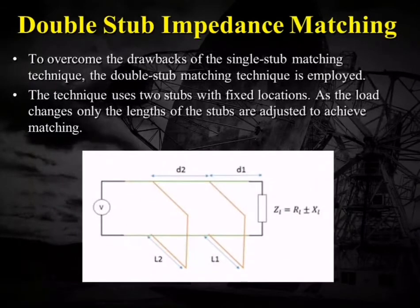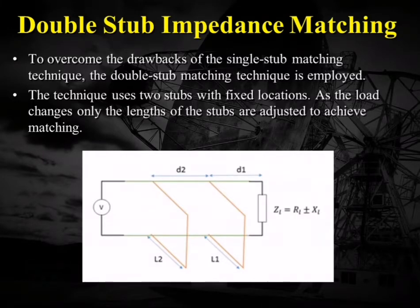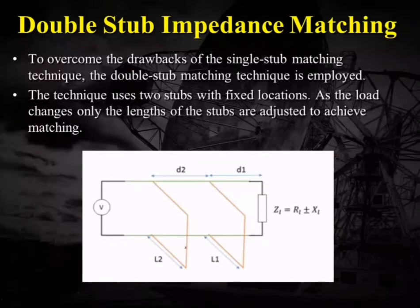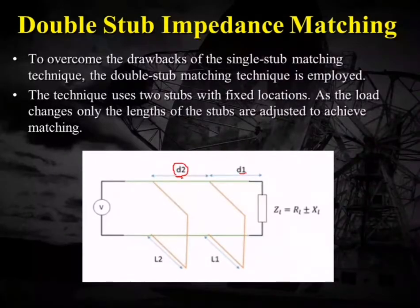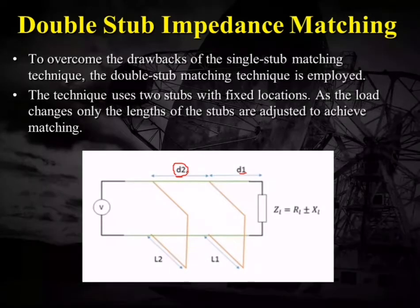We have already discussed single stub matching in the previous lecture, Lecture 5. To overcome those drawbacks of single stub matching, the double stub matching technique is employed. The technique uses two stubs in fixed locations of length l1 and l2. The distance d1 is the distance of the first stub from the load, and d2 is the distance of the second stub from the first stub. This d2 is almost fixed in double stub matching — either 3λ/8 or λ/8.